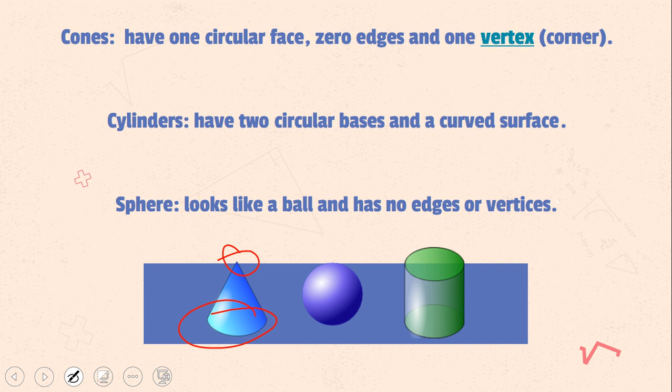Cylinders have two bases, so one, two. Two faces, and that means that they have two curved edges. But they also have this part here, which goes around, and it's curved. And then the sphere, obviously, it looks like a ball. It doesn't have any flat edges. It has no vertices, but again, it has a curved face.